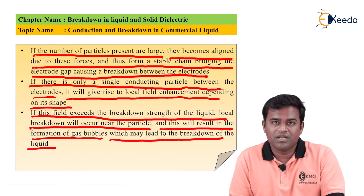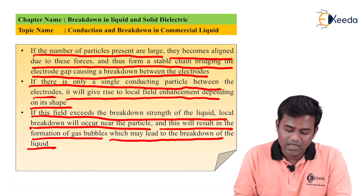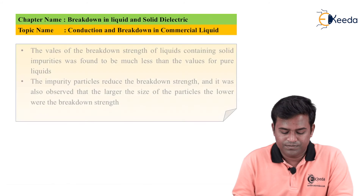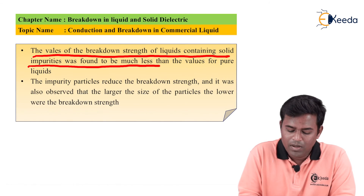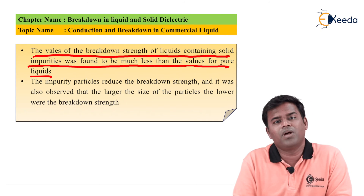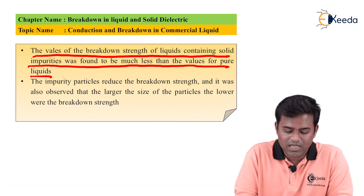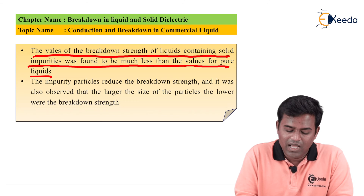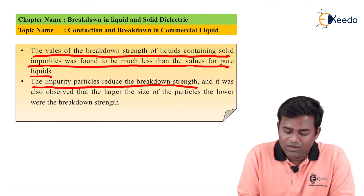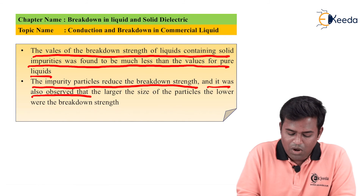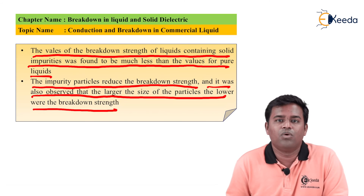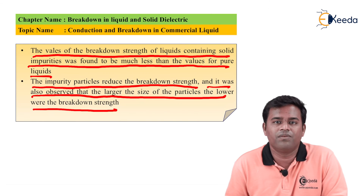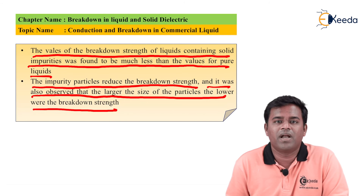In summary for the suspended particle theory: breakdown occurs due to solid particles. The values of breakdown strength of liquid containing solid impurities are found to be much less than in pure liquids, where there are no impurities. It was also observed that the larger the size of the particles, the lower the breakdown strength. Simply stated, in commercial liquids compared with air and gas, the breakdown strength is less.